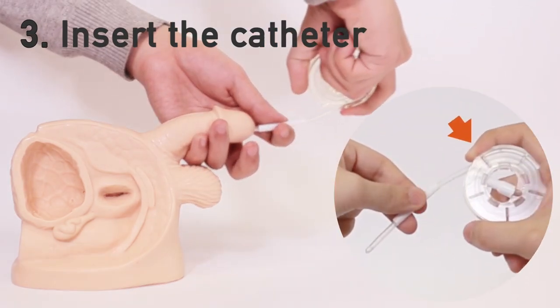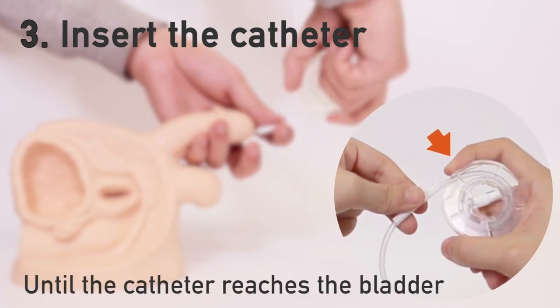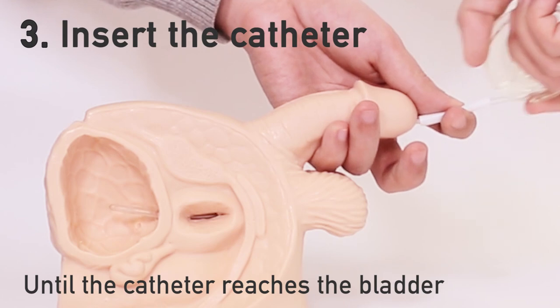Advance the catheter by pressing down on the handle while holding the sheath until the catheter reaches the bladder. Before the catheter reaches the bladder, you might feel some resistance.